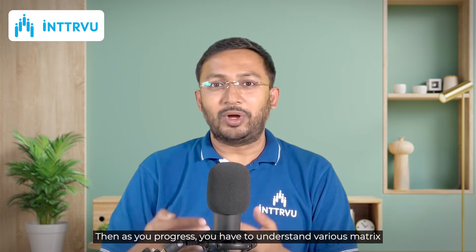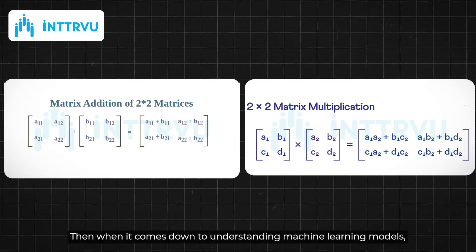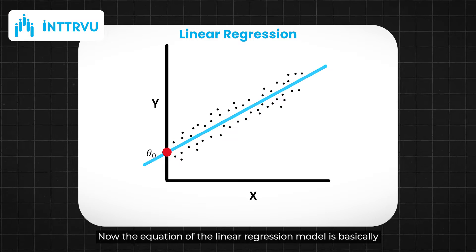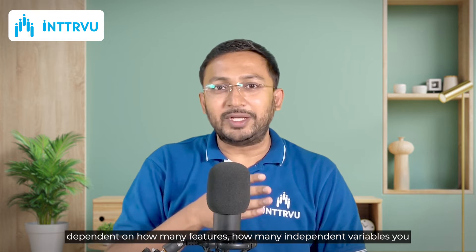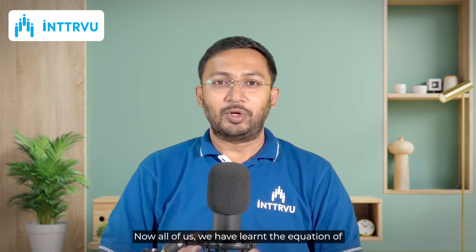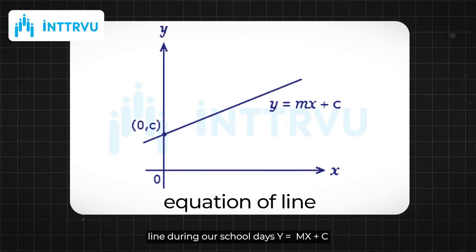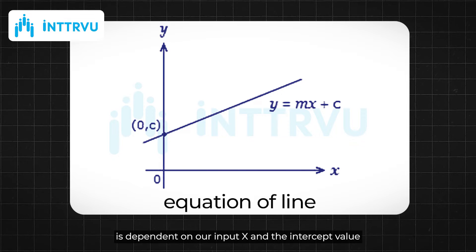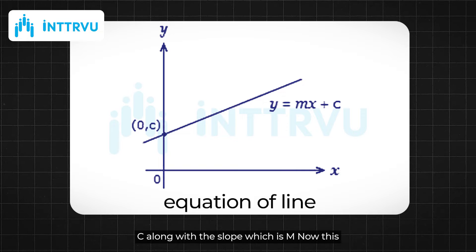As you progress, you have to understand various matrix methods like how to add and multiply matrices. Then when it comes to understanding machine learning models, let's take linear regression as an example. The equation of a linear regression model depends on how many features or independent variables you have. We all learned the equation of a line during our school days: y = mx + c, where output y depends on input x, intercept c, and slope m.